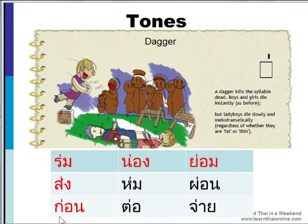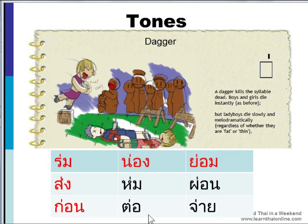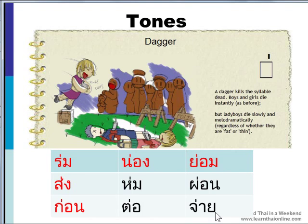This word has the same pattern — it's a boy because of the chicken — and the dagger makes it sad — gone — which means before. Here you have the Indian fakir with the tired stomach, the TH sound, followed by the AH vowel. That's a boy, and the dagger makes it sad — tha — and that means to connect with somebody, to call somebody, or something that comes up next. It can also be used to mean to haggle. The final word is the captain chewing tobacco with the AH vowel followed by the yakking ladyboy. Because it's a dagger, it's a sad sound — jai — and that means to pay something.